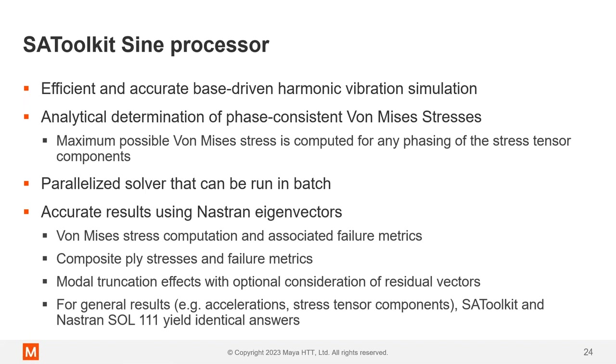And the results are accurate using the Nastran eigenvectors. You can compute von Mises stress, the associated failure matrices, composite ply stresses and failure metrics. It handles the modal truncation, as we talked about. And for the general results, your accelerations, your stress tensors. SA Toolkit gives the same answers as Nastran Solution 111. So it's the same answers. You just get them faster.